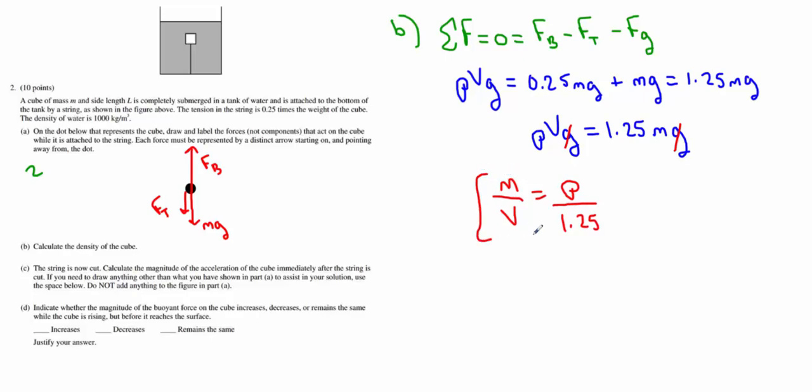Since mass over volume is the density, really all we've got to do is take that density of the fluid it's in, water, 1000 kg per cubic meter, divided by 1.25. This ends up being 800 kg per cubic meter.